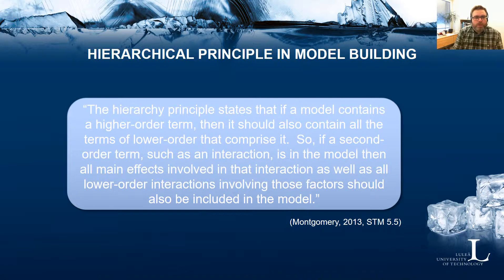So if a second order term such as an interaction is in the model, then all main effects involved in that interaction as well as all lower order interactions involving those factors should also be included in the model. For example, let's say two-factor interaction AB is significant and the main effect of B is found significant, but not the main effect of A. Then we have a choice to go with a hierarchical model and also include A as a main effect, adhering to the hierarchical principle in model building, or we can choose not to include A and go with a non-hierarchical model.